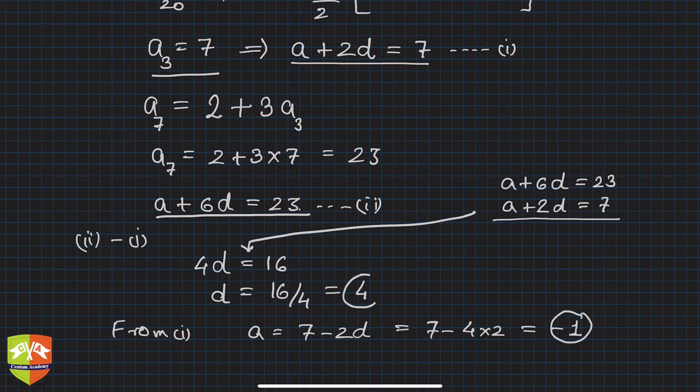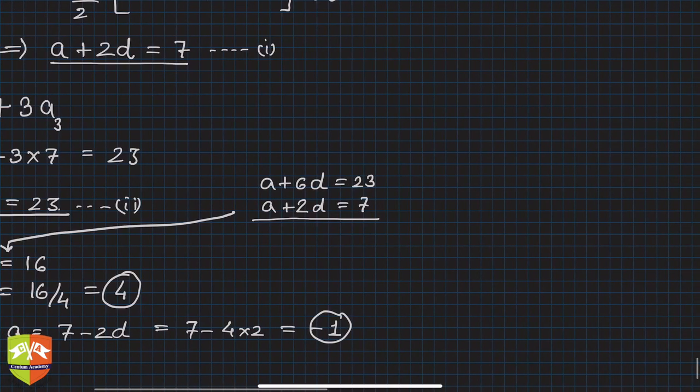Now a and d both are known, so sum of 20 terms will be known. We can deploy the values here in this equation and we are done. So hence, S_20 is simply 20 by 2, which is 10, into 2 times a—so 2 times minus 1—plus 20 minus 1 is 19 times d, which is 4.